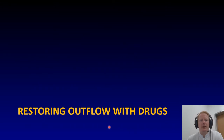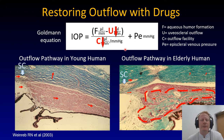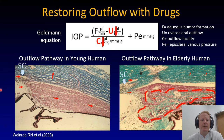Restoring outflow with drugs. This is the Goldman equation. F is the aqueous humor formation, minus U, the uveoscleral outflow, divided by C, the outflow facility, plus the episcleral venous pressure. C and U — uveoscleral outflow and outflow facility — decrease as we get older, and more so in glaucoma. And that results in an increased IOP.